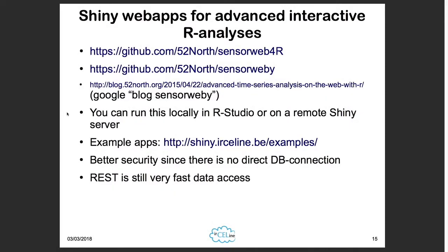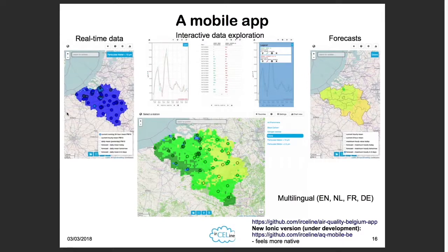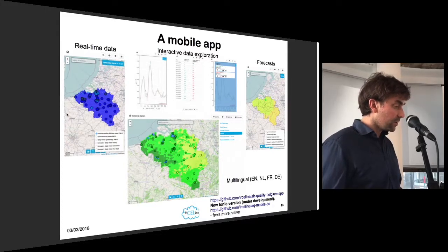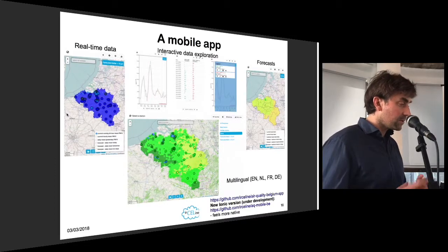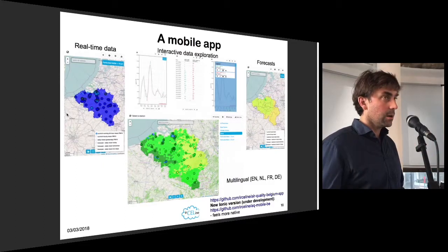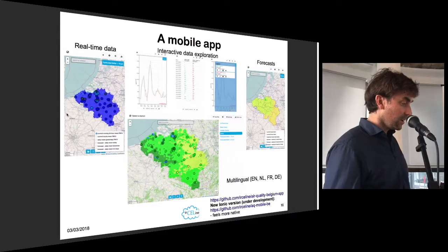We also have a mobile app. Previous older versions may not feel very native, but the concept was especially to have open source code which can be reused for other purposes easily. We are working on a new version based on Ionic, which feels a lot more native. The same philosophy applies: develop open source base code which can be reused for different purposes, so feel free to adapt it any way you want.